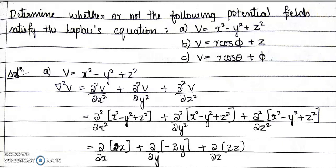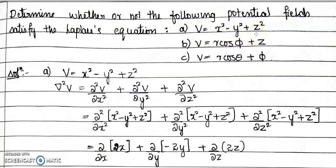In Case 1, V = x² − y² + z² is in the Cartesian coordinate system. In Case 2, V = R cosφ + z is in the cylindrical coordinate system because R, φ, z are present. In Case 3, V = R cosθ + φ is in the spherical coordinate system because R, θ, φ are present. For each case, we must prove whether del²V = 0 or not.